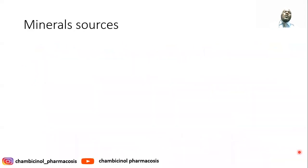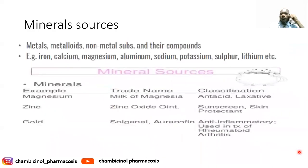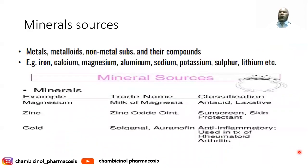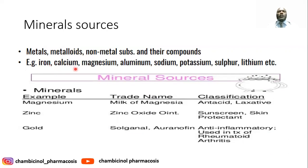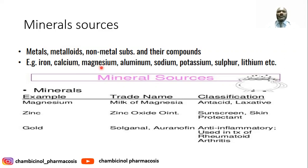You can also obtain drugs from minerals as a natural source. This includes metals, metalloids, non-metals, and their compounds — including ions. For example, iron sulfate used as an iron supplement, calcium gluconate used for calcium supplementation, and magnesium sulfate marketed under the brand name Milk of Magnesia, used as an antacid and laxative.